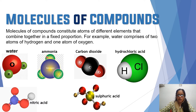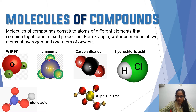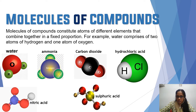The next example is ammonia, NH3. One nitrogen atom is attached with three hydrogen atoms. Here you can see the green color representing hydrogen atoms — nitrogen attached with three hydrogen atoms, that is ammonia NH3. The next one is carbon dioxide, CO2 — one carbon atom attached with two oxygen atoms.